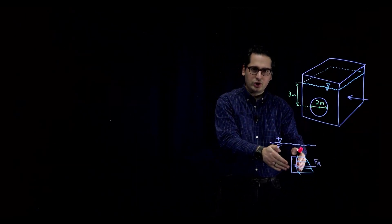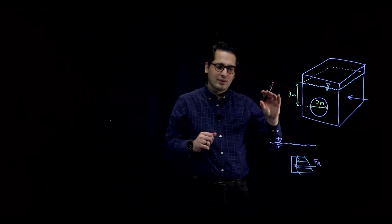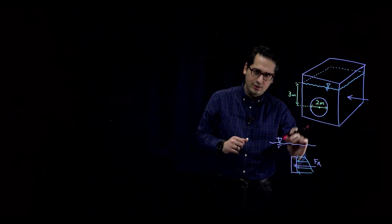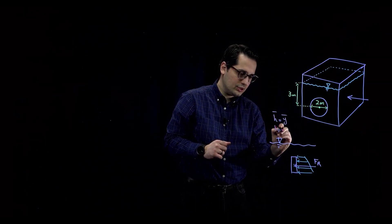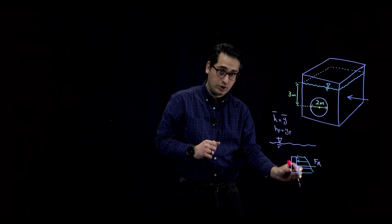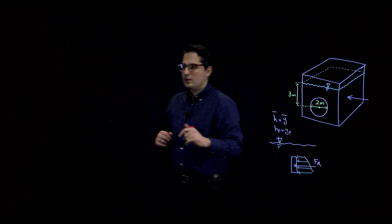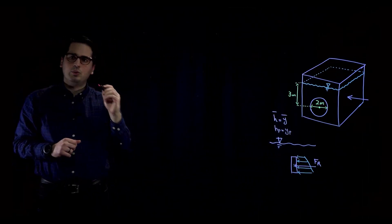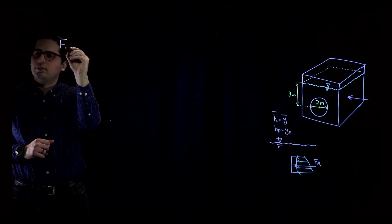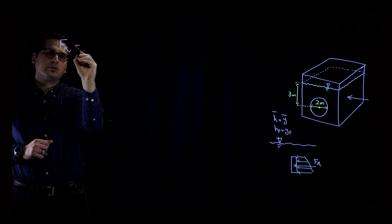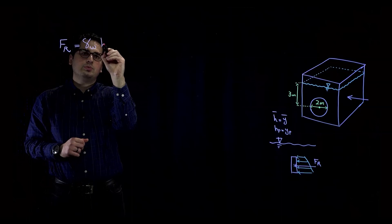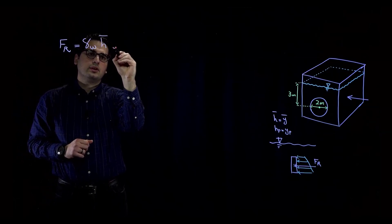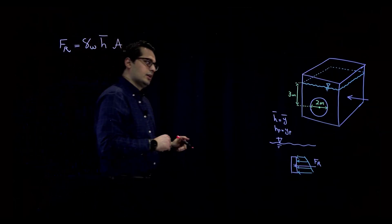This plate is vertically submerged underwater. Remember from the previous video: whenever we have a vertically submerged plate underwater, H-bar is equal to Y-bar, and H-P is equal to Y-P. So let's go back to the main equation. When we want to calculate the magnitude of the resultant force, that would be gamma — in this case gamma of water — times H-bar times the area of this plate.